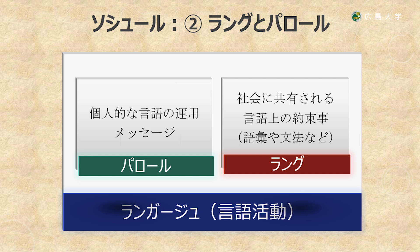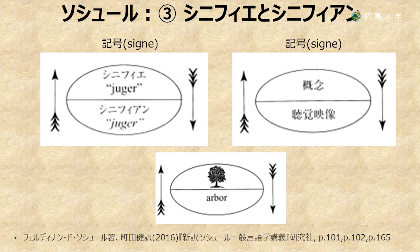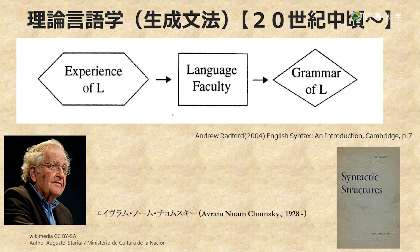次にソシュールは人間の言葉の総体をランガージュ（言語活動）と呼び、ランガージュには個人的な言語の運用であるパロールと、社会に共有される言語上の約束ごとであるラングという側面があることを指摘しています。そして言語学はパロールではなくラングを研究するものであると言っています。またこのラングは記号（シーニュ）の体系であり、記号はシニフィエとシニフィアンから成り立ちます。シニフィエというのは言葉の概念を表し、シニフィアンというのは音の連鎖を表します。例えばキという概念がラテン語ではアルボルという音と結合して一つの記号を形成しているということになります。